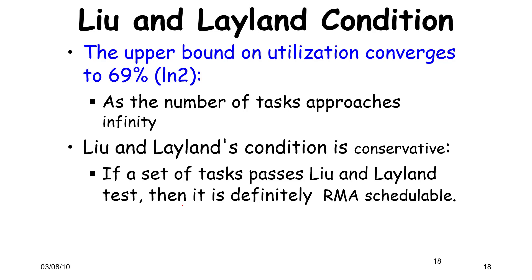Returning to the Liu and Layland condition: it places an upper bound of 69% regardless of the number of tasks. This is quite conservative — it is a sufficient condition, not a necessary condition. Experiments suggest that between 69% and 88% is a gray area where a large number of tasks are actually schedulable even though they fall outside this bound.